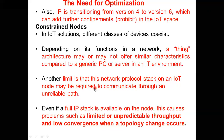Another limitation is that the network protocol stack on an IoT node may be required to communicate through an unreliable path. The connectivity in an IoT environment is unreliable — that is the main thing. Even if a full IP stack is available on the node — meaning the same IP developed 30 years back put into a constrained device — the problems that can be faced are highlighted here.